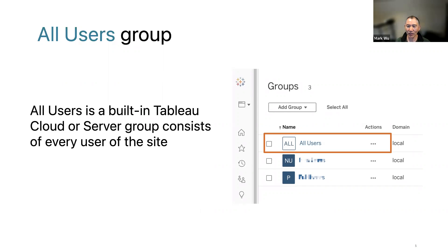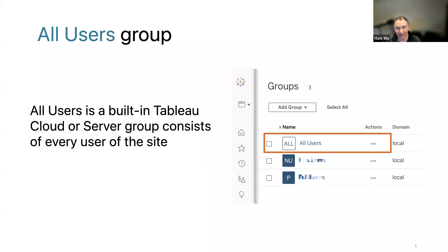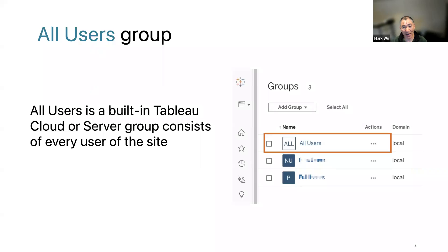We decided we do not want any publishers to use the All Users group. Easy to say, very hard to implement. I tried to delete the All Users group — I cannot. If I delete it, permissions become completely messed up. I tried to rename it — that did not work either. The All Users group is a built-in Tableau group. It is what it is. The renaming may be available now, but at least two or three years ago I couldn't rename it.